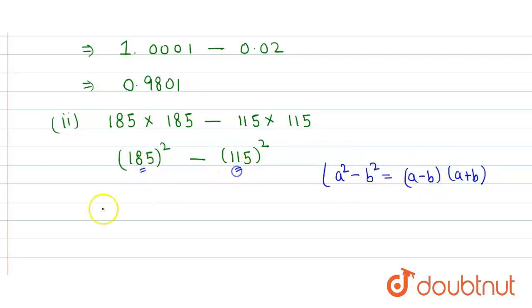So this part is a and this part is b. So we get (185 + 115)(185 - 115).